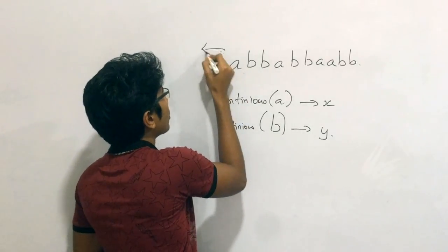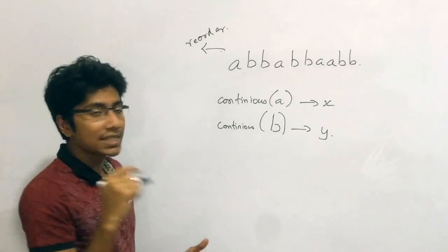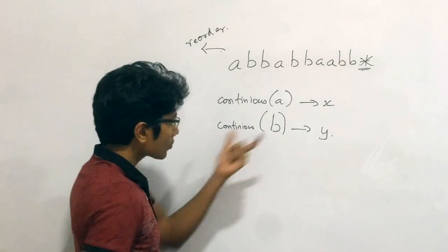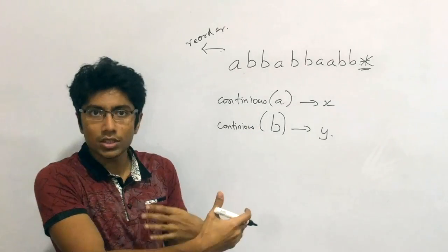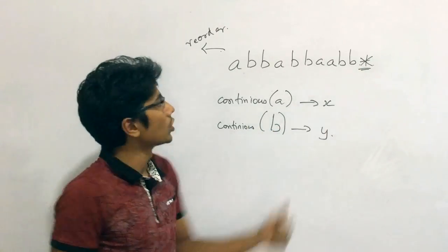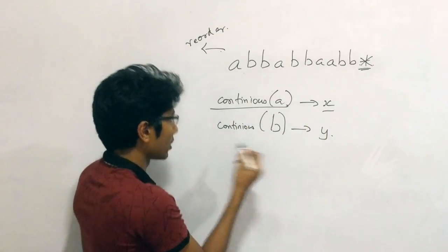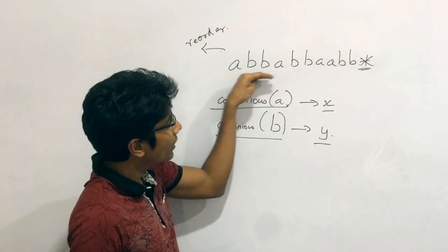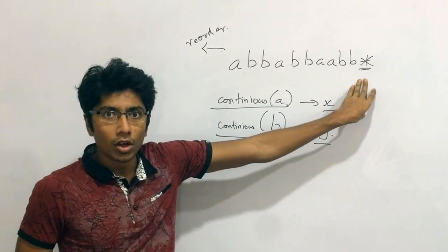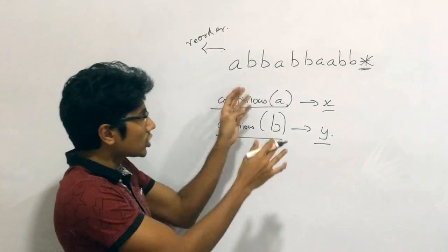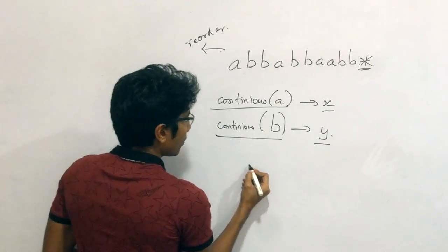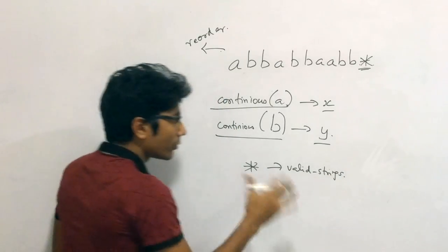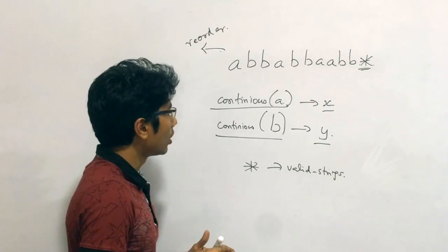The first operation you can do is reorder the string. The second operation is to insert something called pairs — they call it a star, a special fruit. When you insert this special fruit, the contiguous block gets disrupted, so you can then have another contiguous block of A's of length X and another contiguous block of B's of length Y, giving you a valid string. Your aim is not just getting a valid string — it's also to insert the minimum number of stars or pairs to get a valid string.